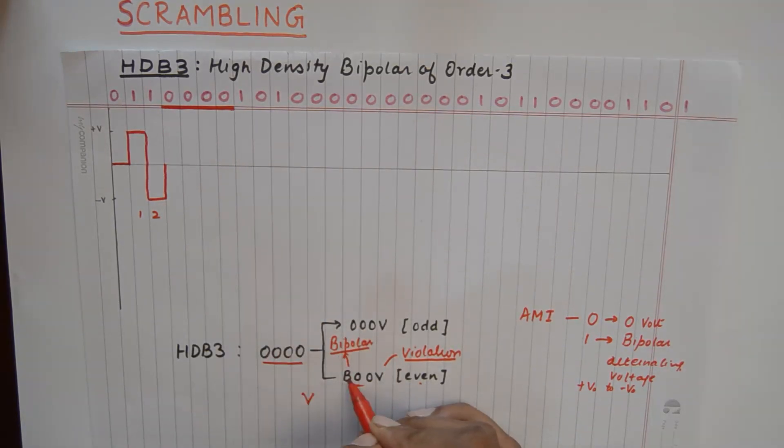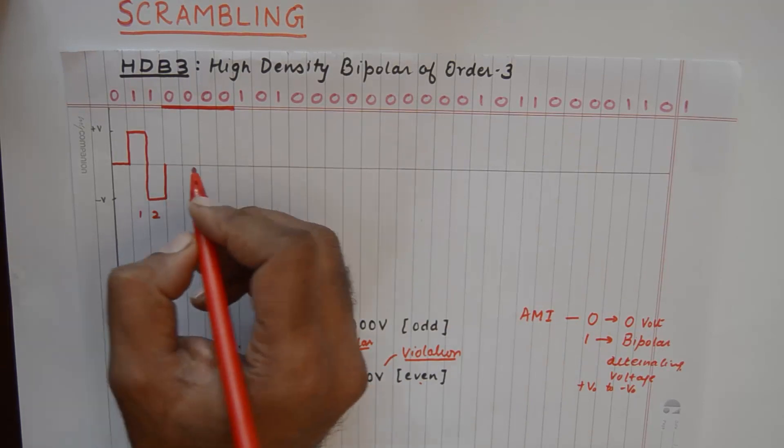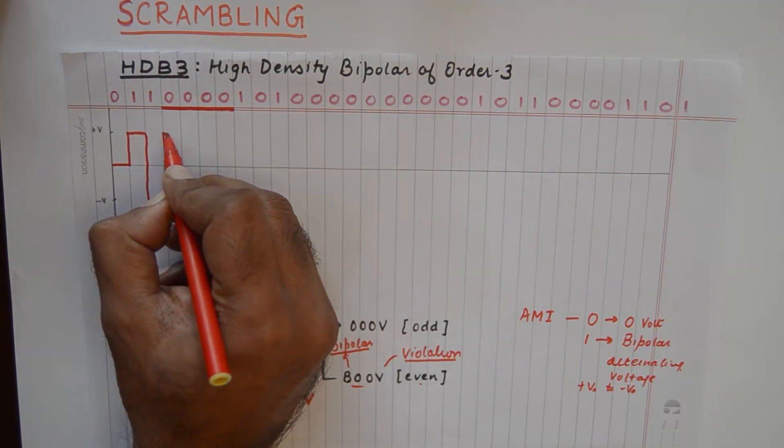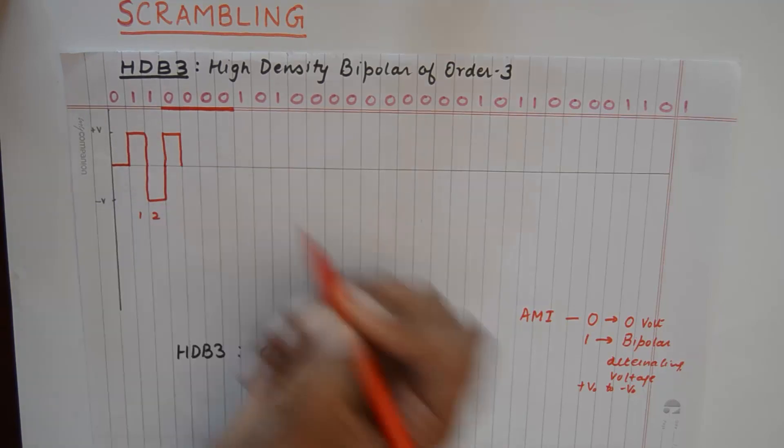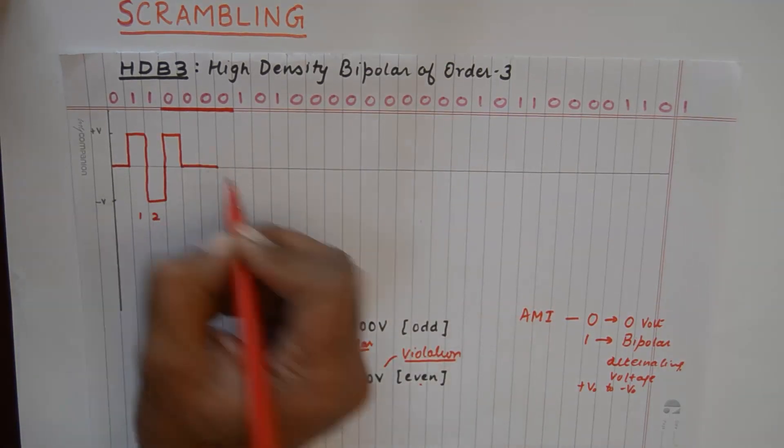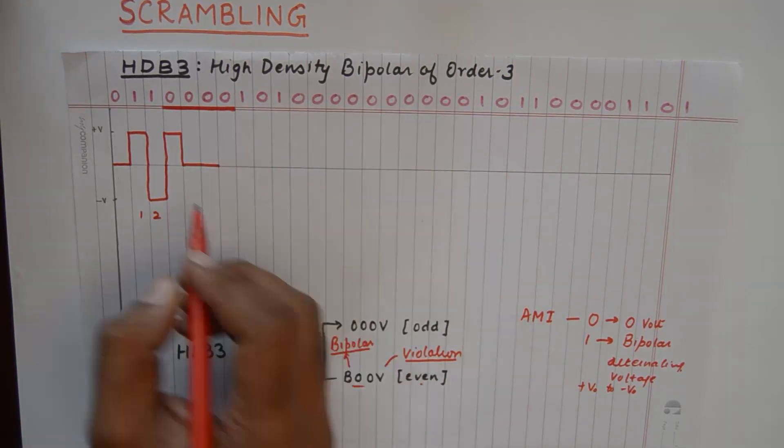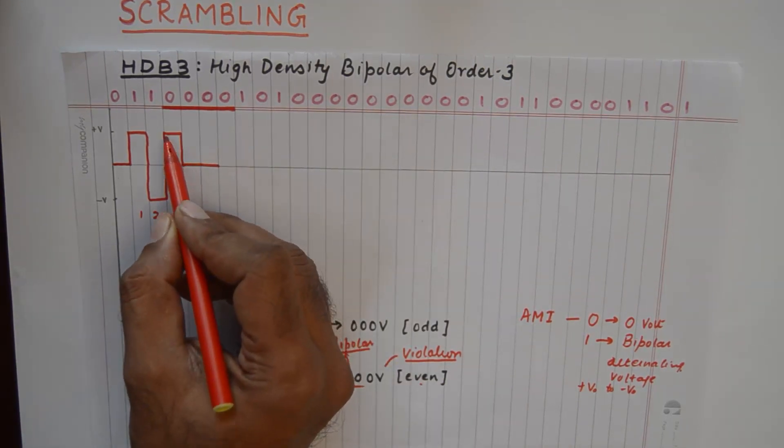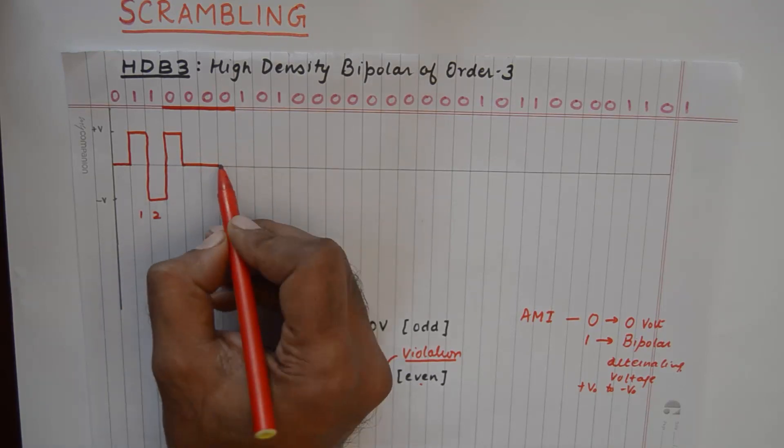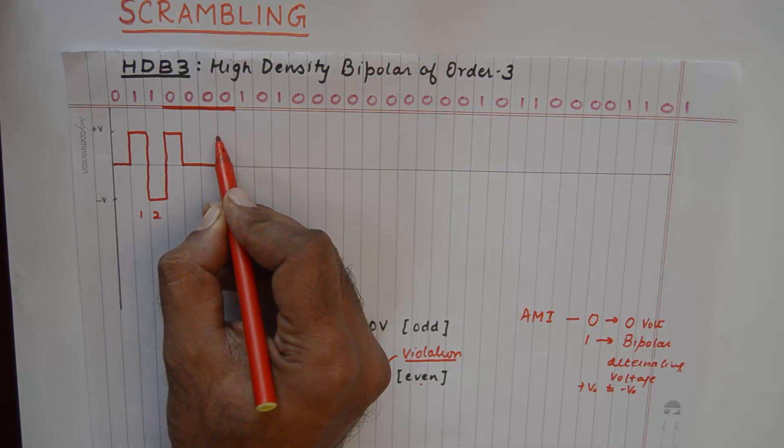The first zero is replaced by B which is a normal transition. So I will take it to plus V. Then we use 00 and then a violation. Now please understand, we need to consider this pulse as the previous pulse and the violation of this pulse will be a plus V again.